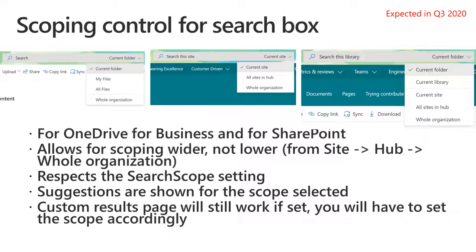The other thing we're excited about is that shared libraries appearing in OneDrive for Business couldn't previously be searched. With this affordance, you'll be able to use the current folder scope to search those areas too. The scoping control is also coming to search boxes in SharePoint — if you're in a library or on a site, you'll be able to scope to the current site, to all sites in the hub if the site is associated with a hub, and again, the whole-organization concept is there as well. Current folder and current library will work in a library or list.